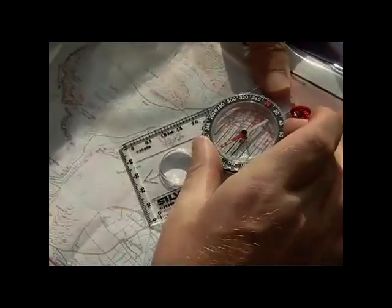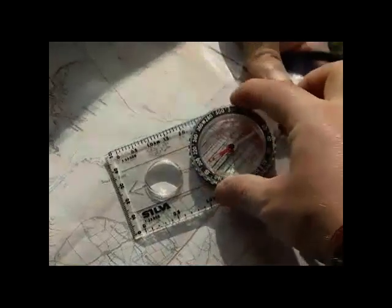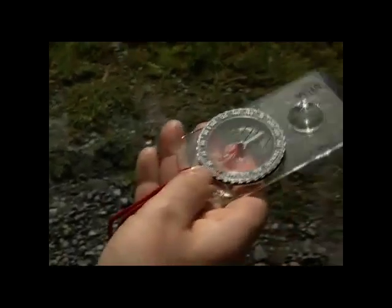A compass is vital for outdoor navigation because it allows you to orientate your map. You can also use it to work out bearings to objects you can see on the ground. A bearing is the direction of travel to an object on the ground.